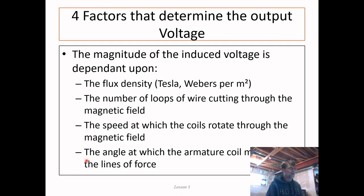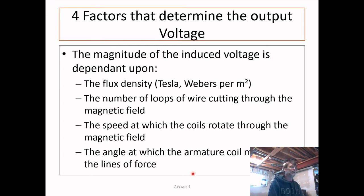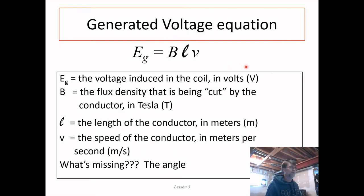The fourth factor is the angle at which the armature coil moves across the lines of flux — the cutting angle becomes a really important part of the conversation.